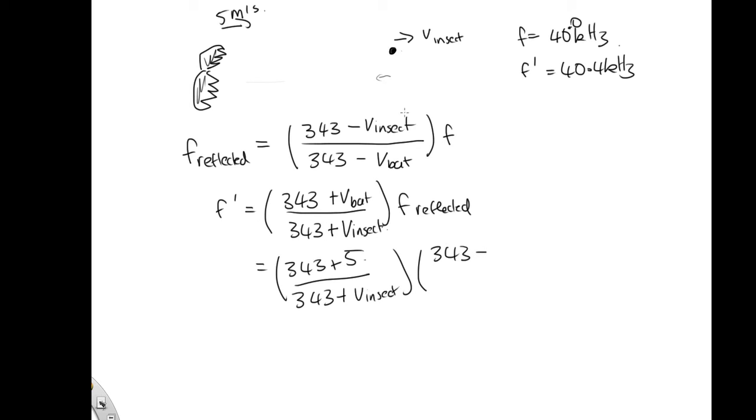over 343 plus v-insect, over 343 minus the velocity of the insect, over 343 minus the velocity of the bat, times f, which is the 40.0 kilohertz, and that is equal to 40.4 kilohertz.